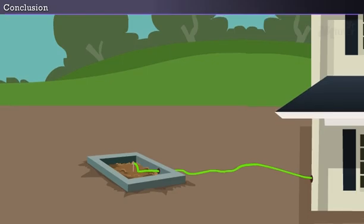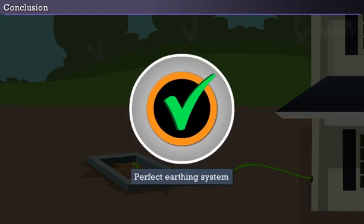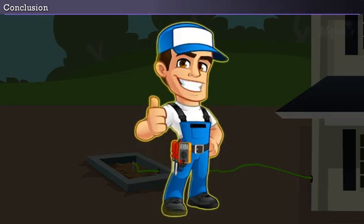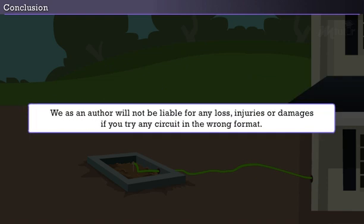Conclusion: So, if you follow these steps properly, you can do a perfect earthing at your home. If you are unfamiliar with the technical terms, don't worry. Just contact a technician to do this task. We as an author will not be liable for any loss, injuries, or damages if you try any circuit in the wrong format.